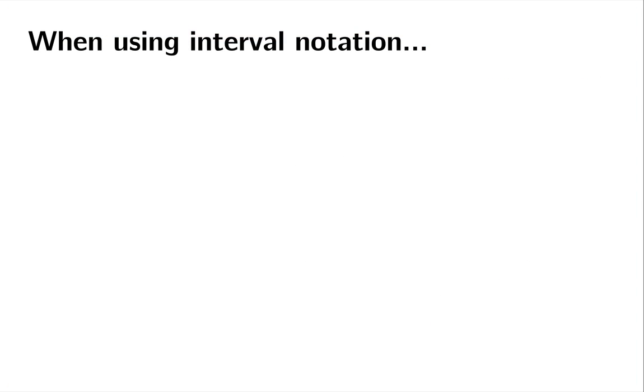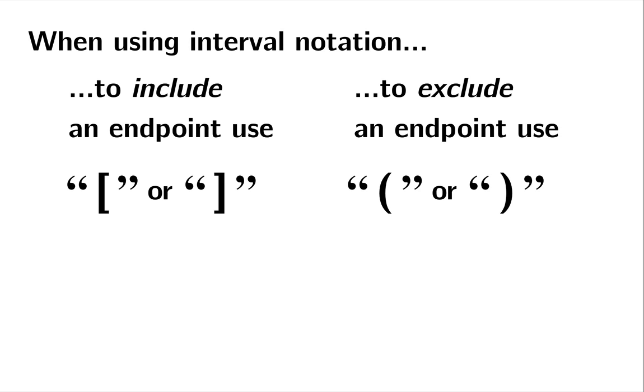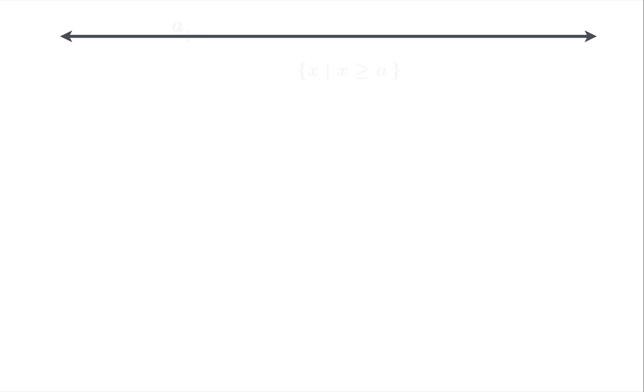Just remember that when you're using interval notation, to include an endpoint use square braces and to exclude an endpoint use round parentheses. We use this notation so often that sometimes we actually call these closed brackets or closed braces and we call these open brackets or open braces because of the context with interval notation. Now what happens when you don't want an endpoint on one side?